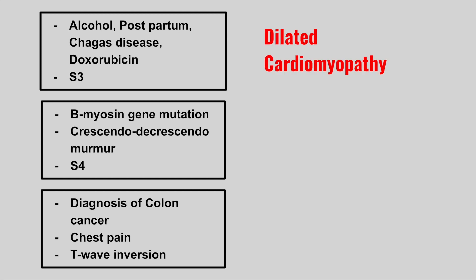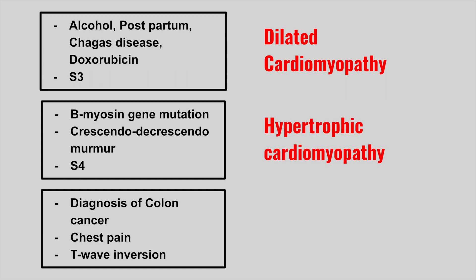The next one is someone who has a beta-myosin gene mutation, a crescendo-decrescendo murmur, and an S4. This is hypertrophic cardiomyopathy.